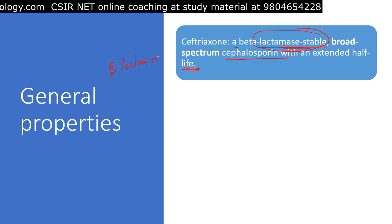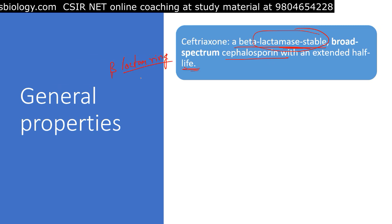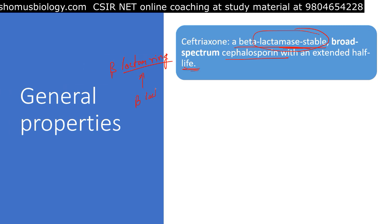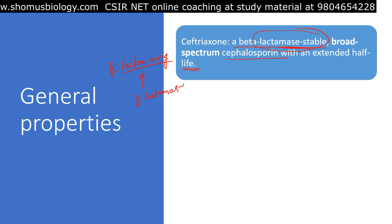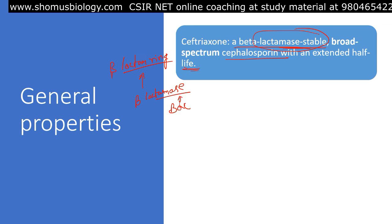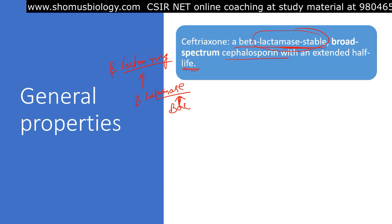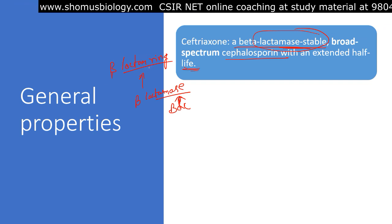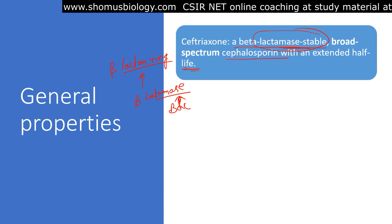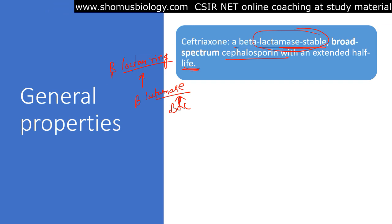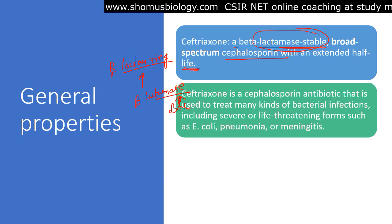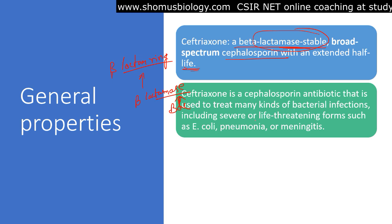As a beta-lactam antibiotic, ceftriaxone has a beta-lactam ring which can be destroyed by the beta-lactamase enzyme produced by some bacteria. To prevent that, this particular antibiotic has a beta-lactamase stable structure — that is what makes it unique.